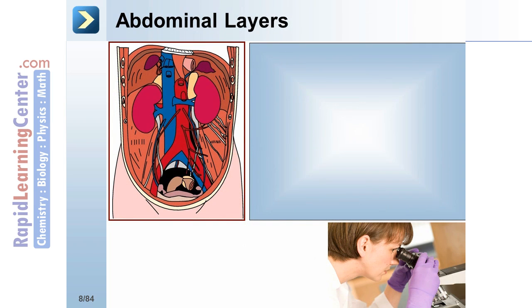There are multiple layers of the abdominal wall, which vary depending on location between the anterior and posterior midlines. A surgeon entering the abdomen in the right upper quadrant would traverse the following layers in this order: skin, superficial fascia,